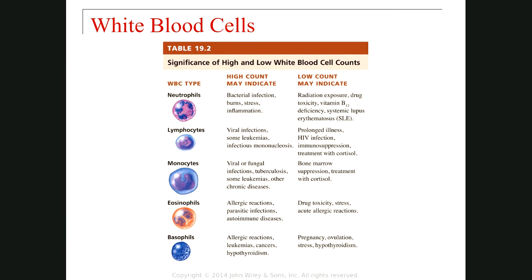In this table you can see the different types of white blood cells — neutrophil, lymphocyte, monocyte, eosinophil, and basophil — ordered by their number in the bloodstream. Neutrophil is the highest, followed by lymphocyte, monocyte, eosinophil, and basophil, which has the lowest number. The table also talks about what happens when their numbers increase or decrease, and what we can identify in our body.